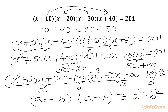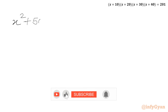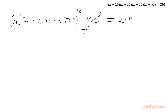So we write: x squared plus 50x plus 500, whole squared, minus 100 whole squared, equal to 201. Now we add 100 squared to both sides, so the minus 100 squared and plus 100 squared cancel out on the left.